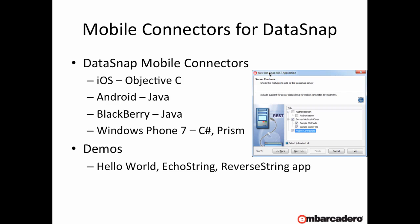DataSnap mobile connectors are available for Objective-C for iOS development, for Android and Java, for BlackBerry Java, and also for Windows Phone 7 and any C# development that you're doing. And obviously this can also be used with Prism.